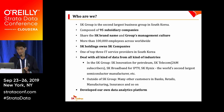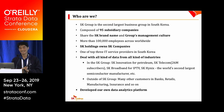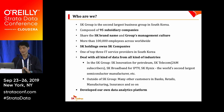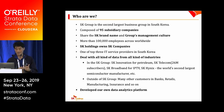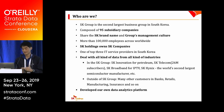SK Group is the second largest business group in South Korea, composed of 95 subsidiary companies. We share the SK brand name and SK management culture, and we have more than 100,000 employees worldwide. Last year, the revenue of our group was more than 200 billion US dollars. SK Holdings owns the SK companies — the headquarters of SK Group — and we are one of the top three IT service providers in South Korea.